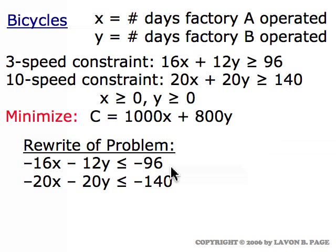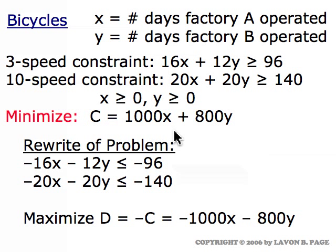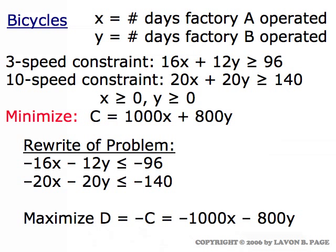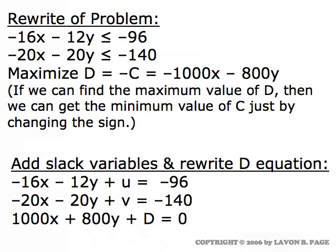We also tamper with the cost function. Instead of minimizing cost C, we replace it with its negative: let D equal minus C, which is minus one thousand X minus eight hundred Y. Instead of minimizing C, we maximize D. Using the sign-changing trick from the blue and yellow boxes, once we find the maximum value of D, the minimum value of C is simply found by changing its sign.